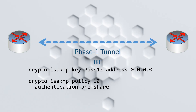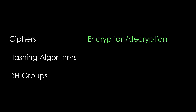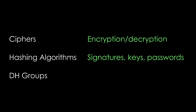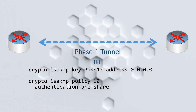We start by choosing the pre-shared key as our method of authentication. The alternative is to use certificates with public and private key pairs, which is more secure but harder to set up. If you've worked with information security before, you will have come across ciphers, hashing algorithms, and DH groups. Ciphers are used to encrypt and decrypt your data. Hashing algorithms are used for signatures, keys, and passwords. The Diffie-Hellman group is used to exchange keys in a secure way. IKE creates a proposal to send to the other endpoint, containing the options we're prepared to use. Both endpoints need to mutually accept each other's proposal. In our example, we're going to use the 256-bit AES cipher, the 256-bit SHA hashing algorithm, and Diffie-Hellman group 19.